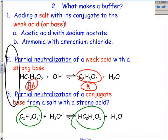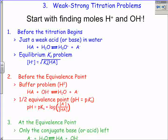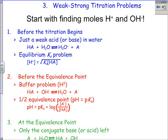For weak-strong and strong-strong titrations, start by finding the moles of H+ and OH-. When you compare how much H+ you have from your weak acid and how much OH- you have from your strong base, it tells you where you're at in the titration. In each spot in a weak-strong titration, you have to do the calculations differently, while in a strong-strong titration the calculations are similar to each other, though the math is easier overall.